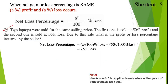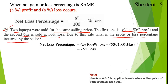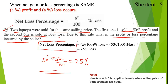Another example: Two laptops were sold for the same selling price. First one is sold at 50% profit and second one at 50% loss. What is the profit or loss percentage for the whole transaction? P equals L equals 50, so 50² over 100 equals 2500 over 100, which equals 25%. So the net loss is 25%. This confirms that when selling price is the same and profit equals loss percentage, there is always a net loss.